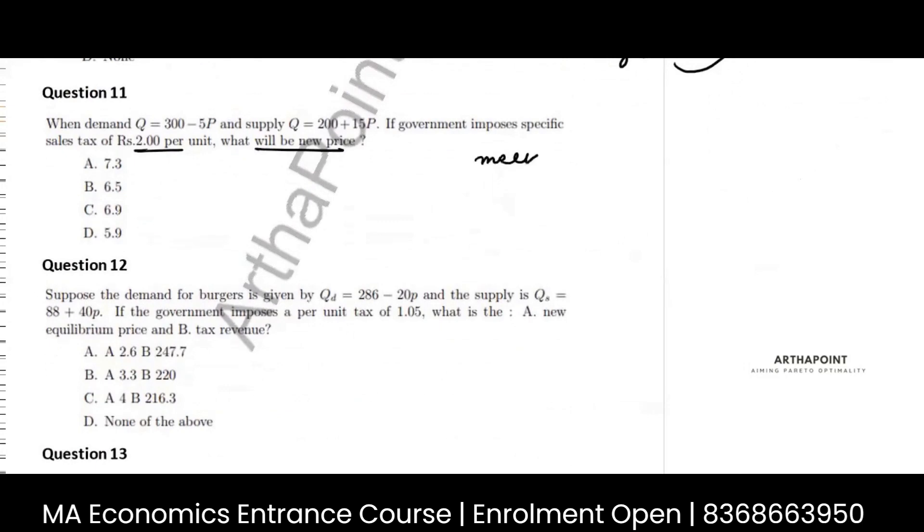Method one is when you impose tax on the producer. Imposing tax on producer means in the supply curve, the net price received by producer will decrease.